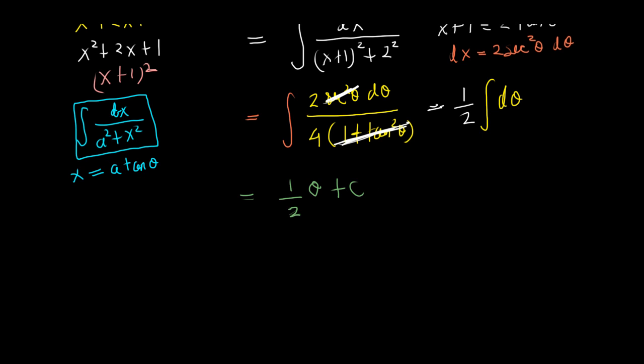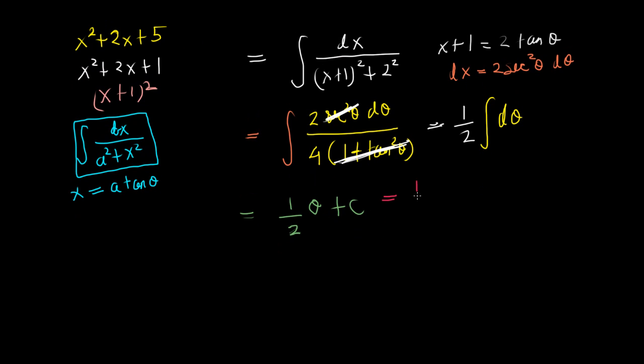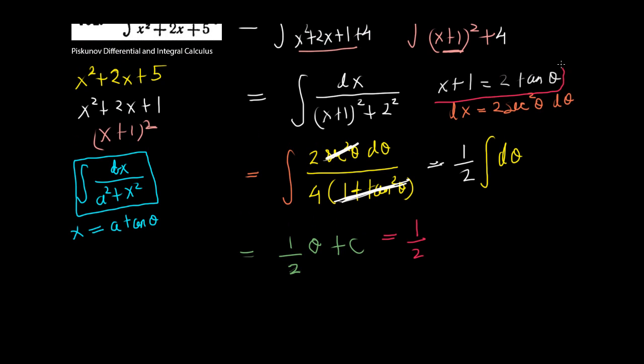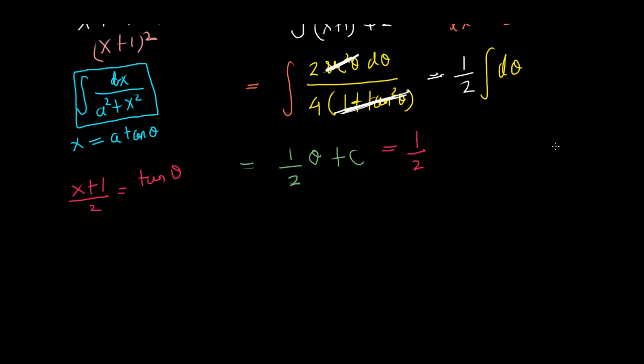But we are not done yet. Because the actual problem was in terms of x. So, we need to express that in terms of x. This is 1 half times theta. Now, I'm going to use this equation here. I'll divide both sides by 2. So, if I divide both sides by 2, then I get x plus 1 over 2 is equal to the tangent of theta. Now, I'll take the arc tangent or tan inverse of both sides. To get that theta is equal to the tangent inverse of x plus 1 over 2.